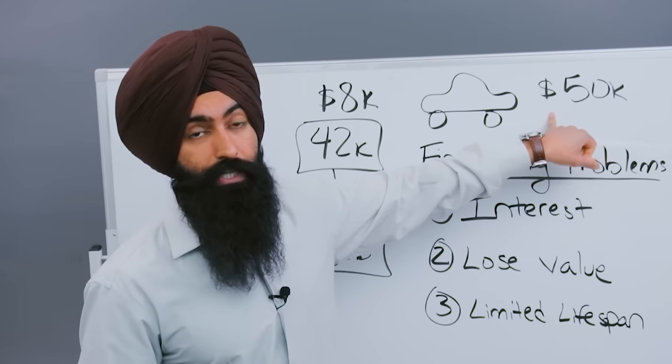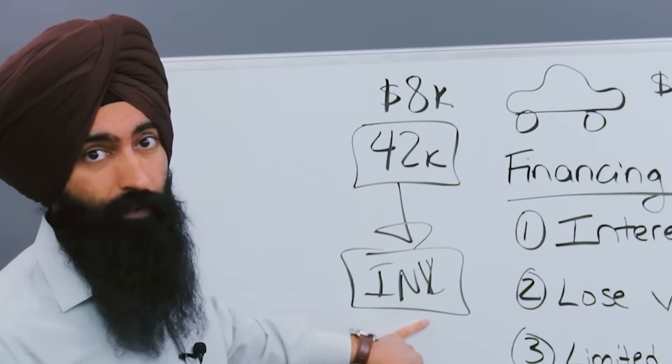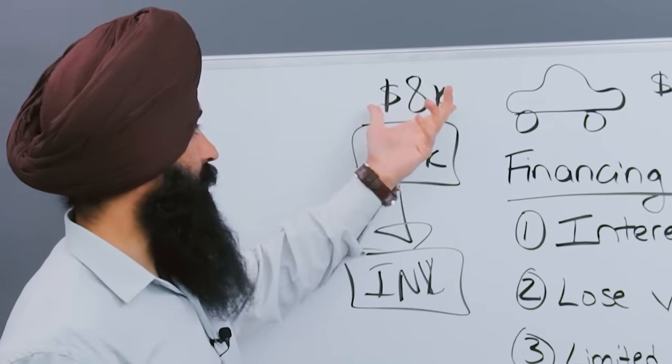The five to 10% in interest that you're getting on the car, hopefully you can get better returns on this. Or maybe you just don't have the $50,000. So now you can just put down $8,000 and now you can drive a nice car. But it gets even better.